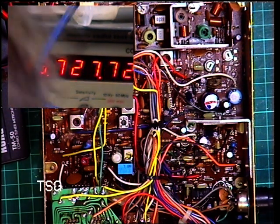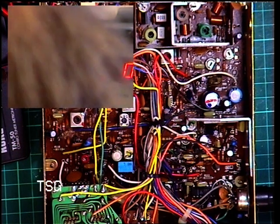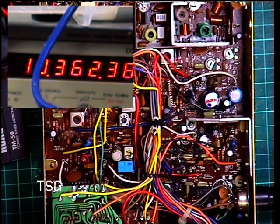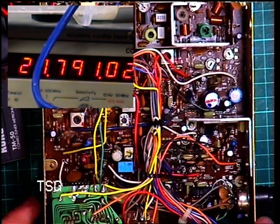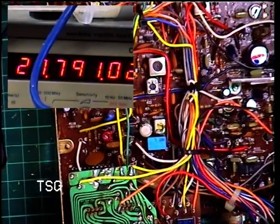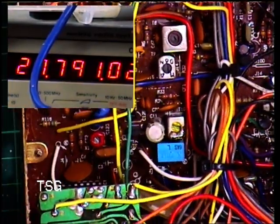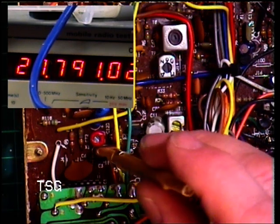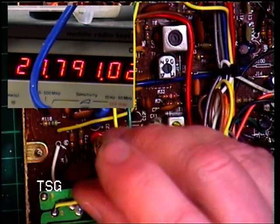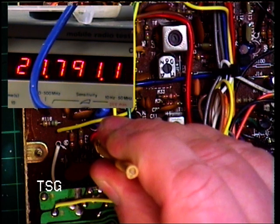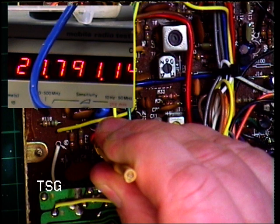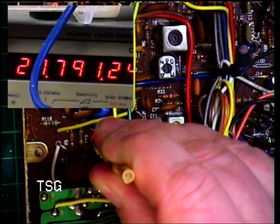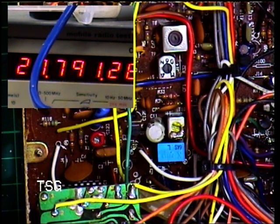Channel 20. 27.79122. So it's the red trimmer down there next to the crystal, which I had to move off that naughty board. I've actually turned it the right way for once. There we go. That'll do nicely. 27.79126.